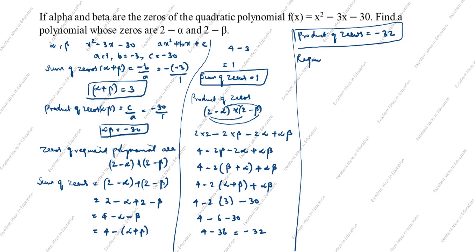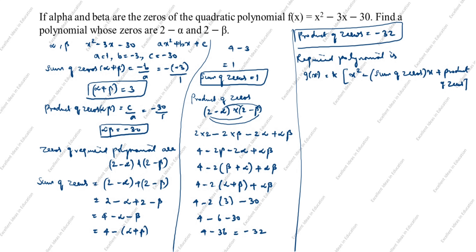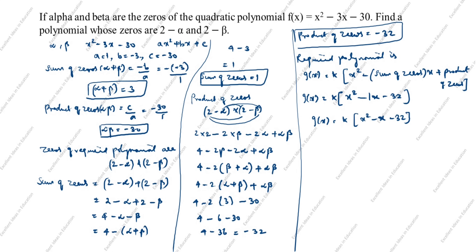The required polynomial is g(x) = k(x² - (sum of zeros)·x + product of zeros). So g(x) = k(x² - 1·x + (-32)), which gives g(x) = k(x² - x - 32). This is the answer.